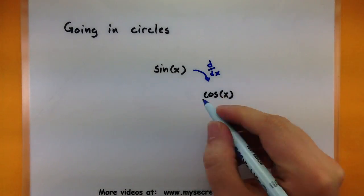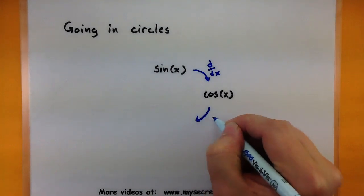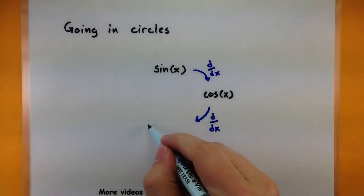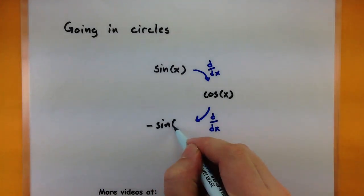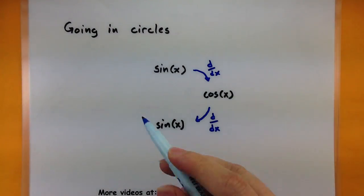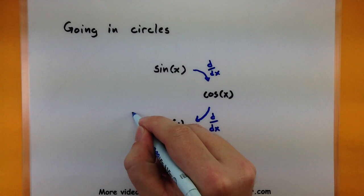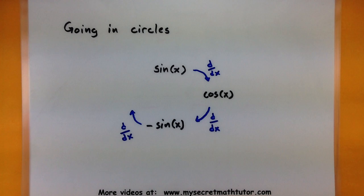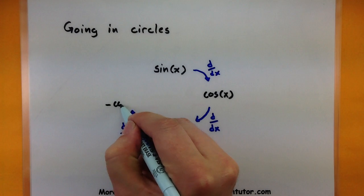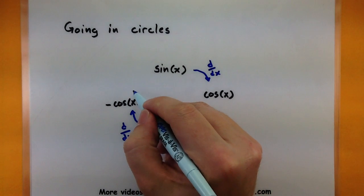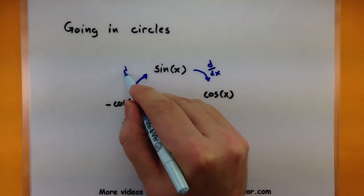And then if you take the derivative of cosine this will bring you to negative sine. This isn't quite originally where we started but we're not that far away. Now we could take the derivative of negative sine and this is like taking the derivative of sine, it's just going to have a negative sign out front so it brings us to negative cosine.